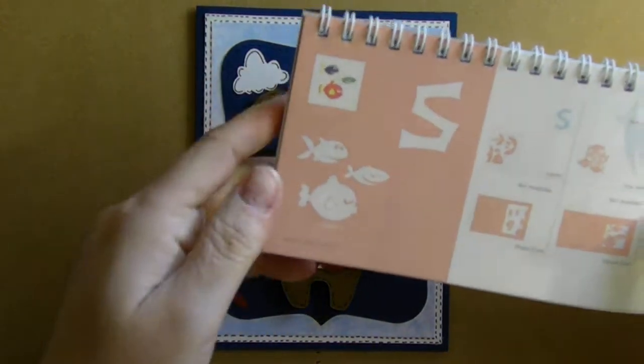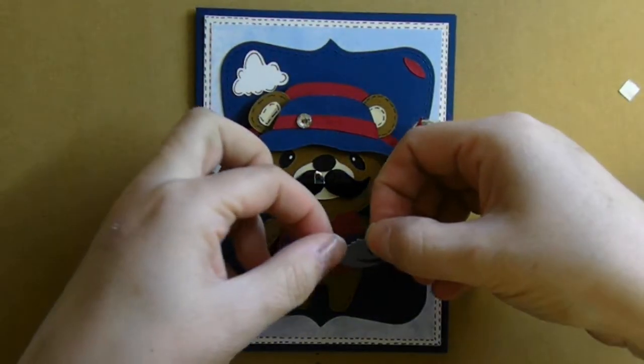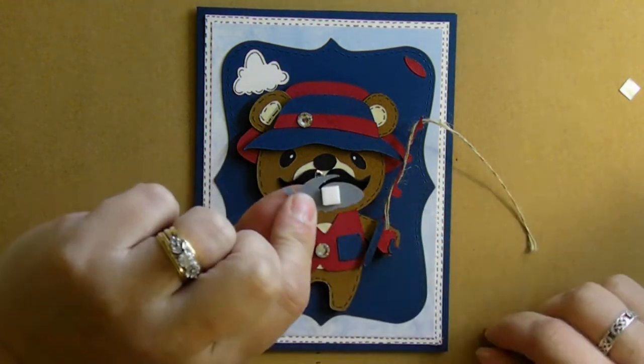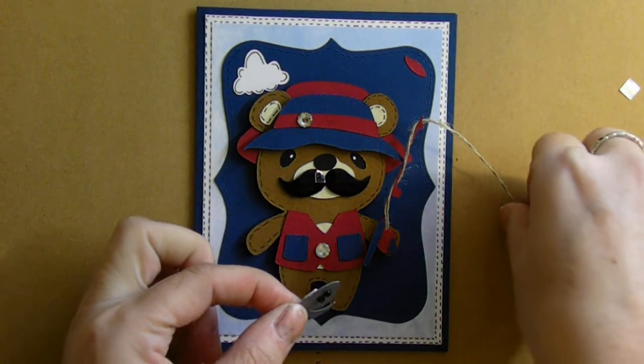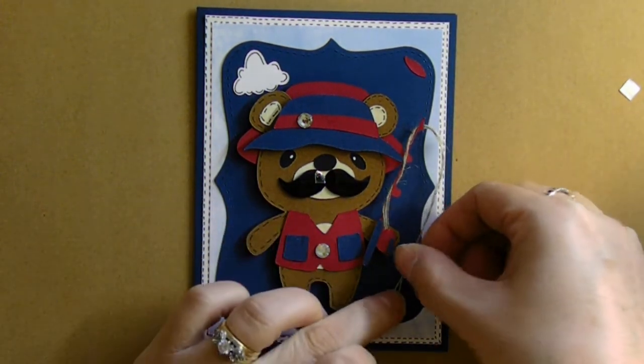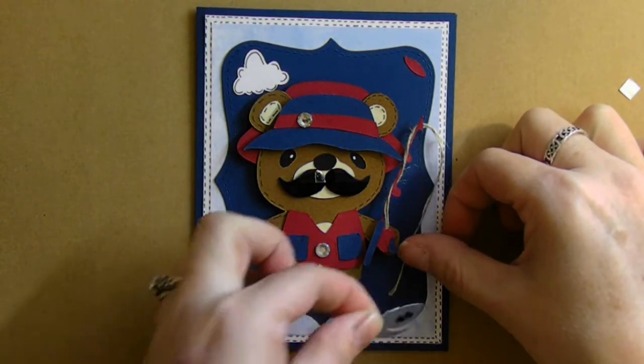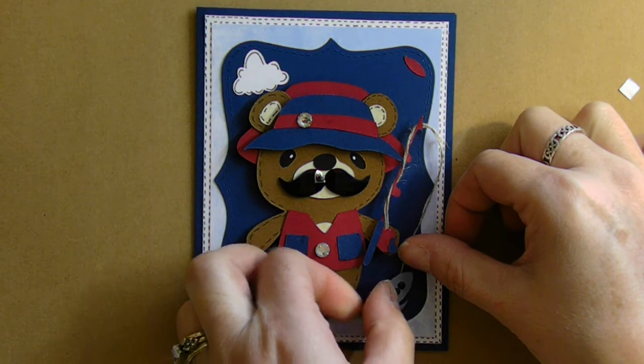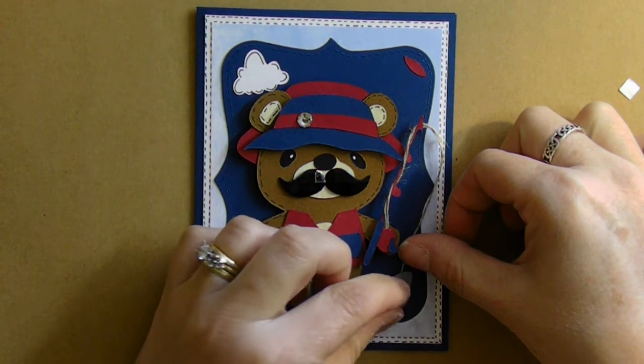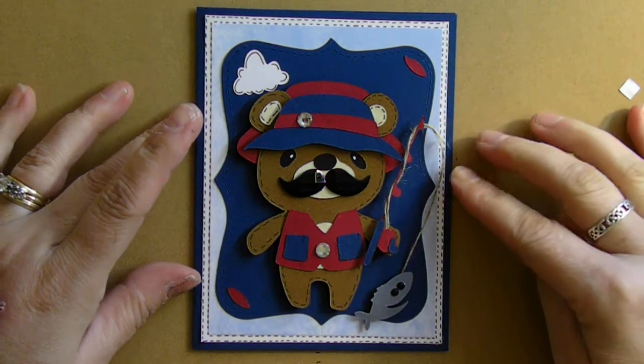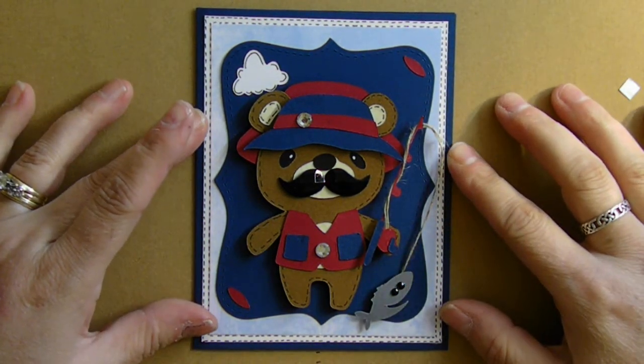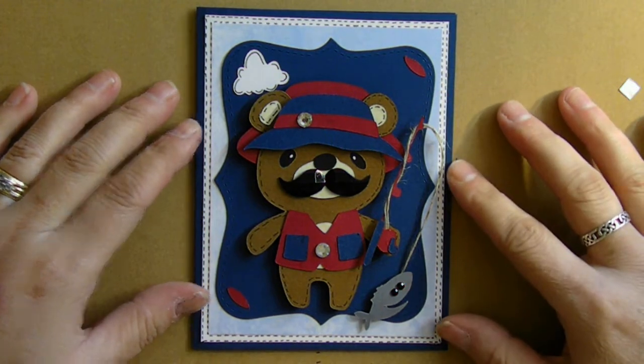I cut it out at two and a half inches. This little gray fish I added some eyes to and as you can see he's raised on a pop dot also and he's just going to attach the base of the string right here so it looks like he's fishing. I thought it was so super, super cute and that pretty much finishes my card.